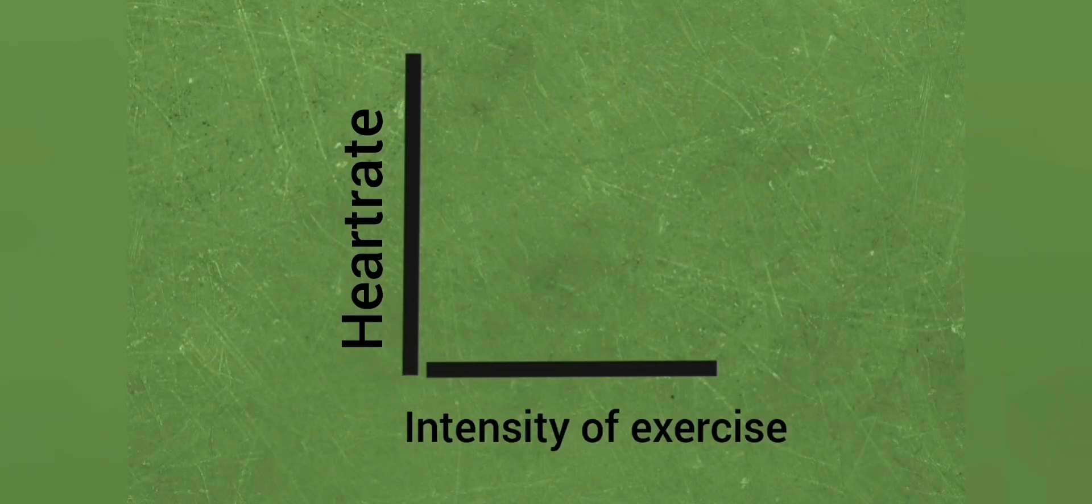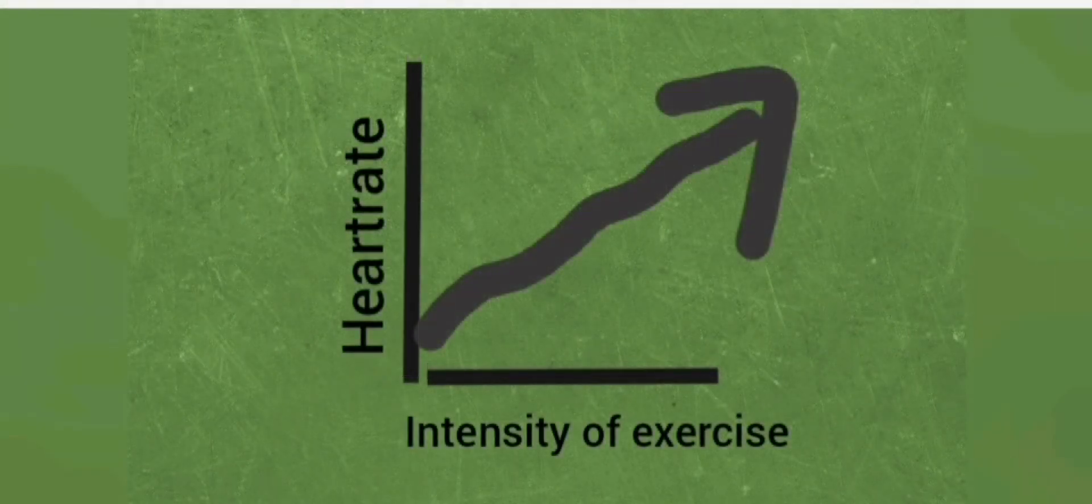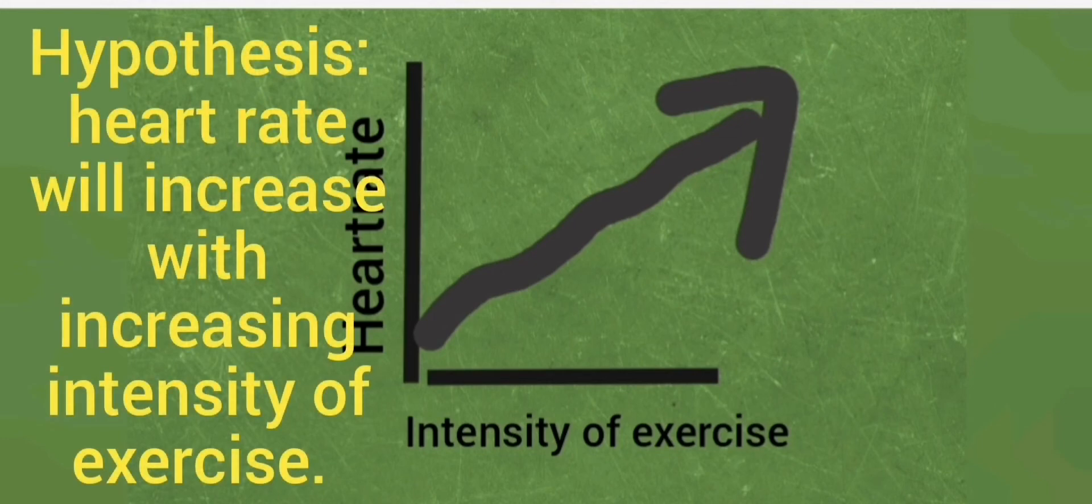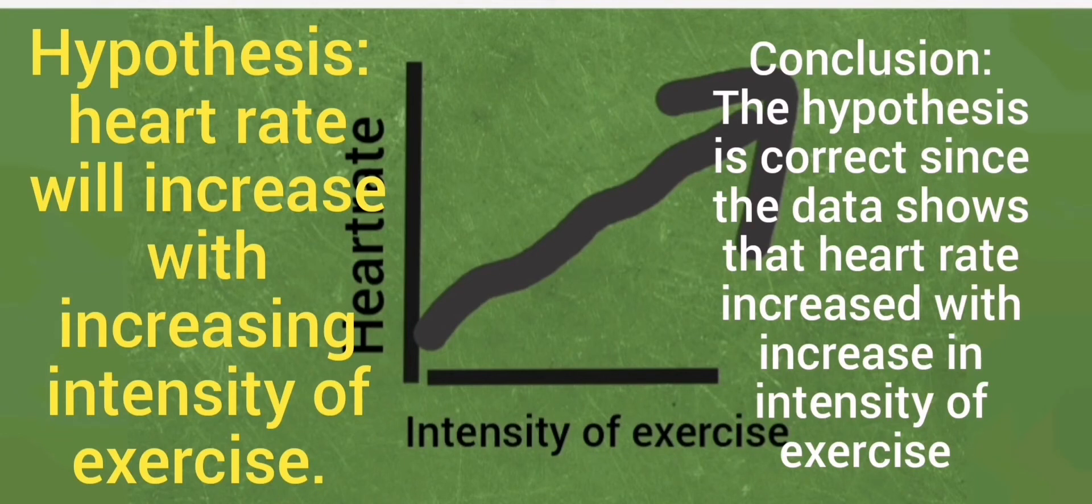So let's say for example we have a graph showing how heart rate changed with the intensity in exercise. And then once we've drawn the graph we see that the heart rate goes up as the intensity of exercise goes up. So then we look back at what did we say initially in our hypothesis, what did we predict initially? If our hypothesis initially was heart rate will increase with increasing intensity in exercise, it means that our graph actually shows that our prediction was correct. So that leads us to the conclusion which will then say the hypothesis is correct, since the data shows that heart rate increased with increasing intensity of exercise.